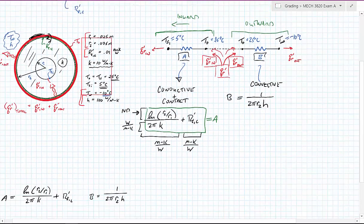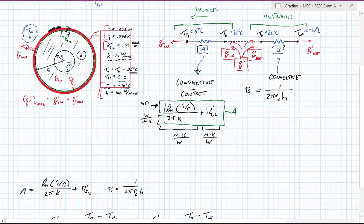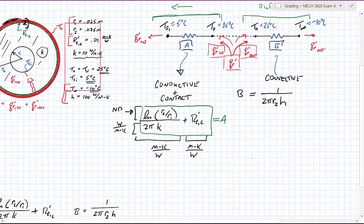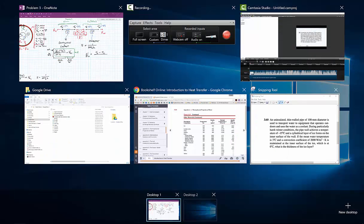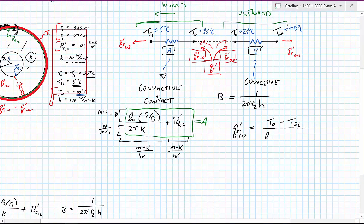So once we have this, we really just need to write out our two terms. So Q_R in is going to equal the temperature difference. So it's going to be T_0 minus T surface inner divided by the thermal resistance, in this case the conductive term plus the contact resistance term.